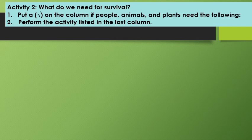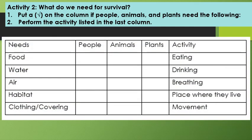Activity 2: What do we need to survive? Put a check on the column if people, animals, and plants need the following. In the first column, you will see the needs of living things: food, water, air, habitat, and clothing. Put a check on the column if people, animals, and plants need them.